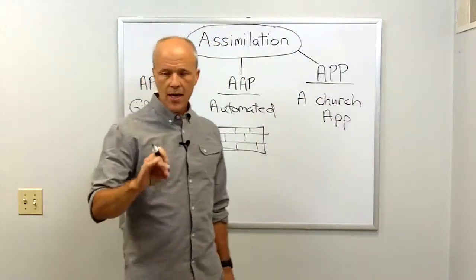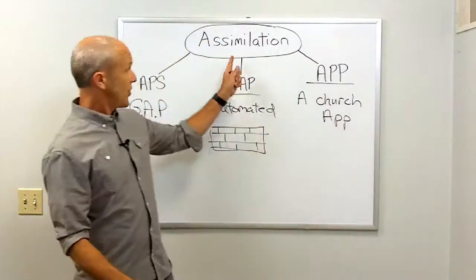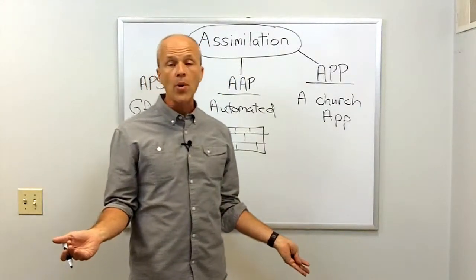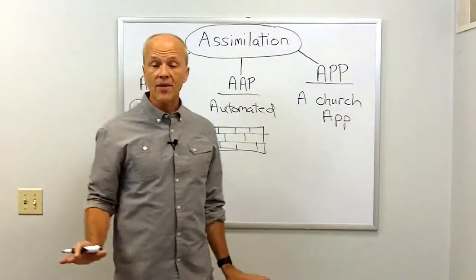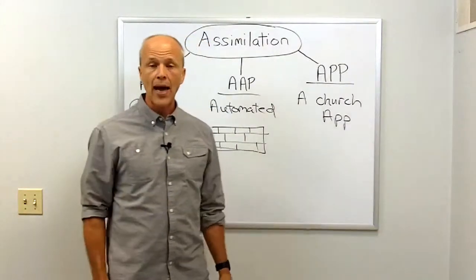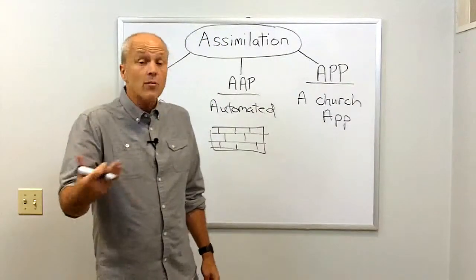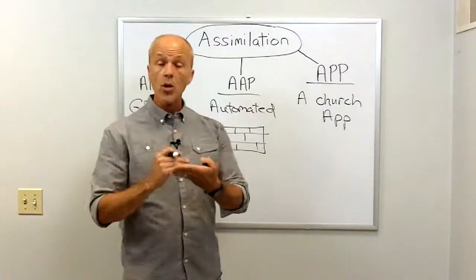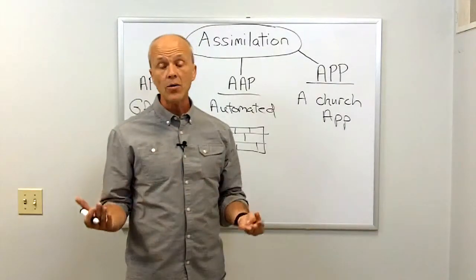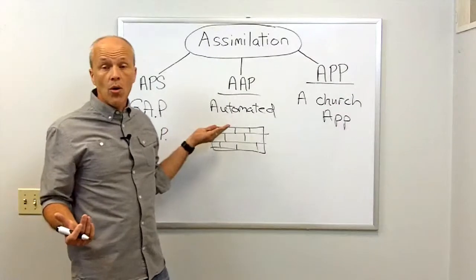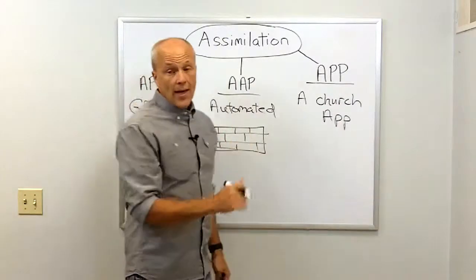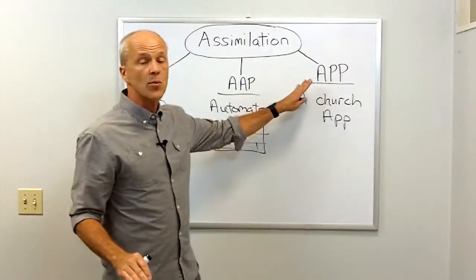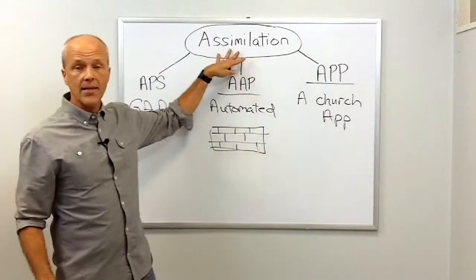The final thing an app should have, if it's going to really help with the assimilation process, is to have your church directory accessible through the app. You may not want that available for everybody who downloads your app, so maybe it's something that has to be given permission to access. But once somebody is a part of your church, being able to pull up a church directory is a great way for them to feel more comfortable. Three ways — relevance, culture, directory — those are possible ways to have an app affect assimilation.